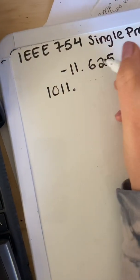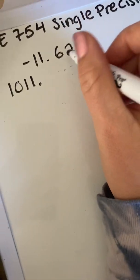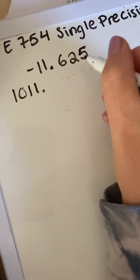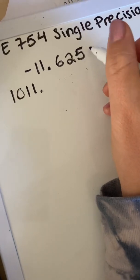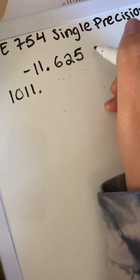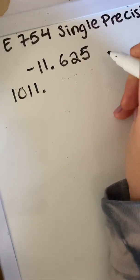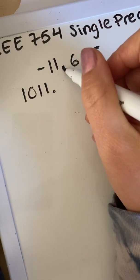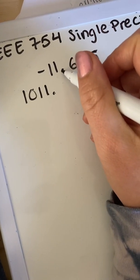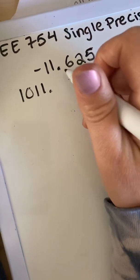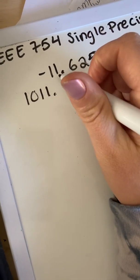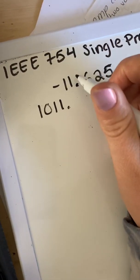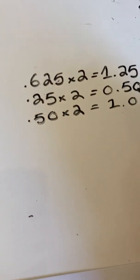The decimal is going to stay there. And then this number over here, 0.625, the way that we can find the binary for this is by multiplying it by 2. And then if the integer on the left side of the decimal is a 1, then we'll add a 1. And if it is a 0, we'll add a 0. And we'll do this until we get to 1, as I have shown here.